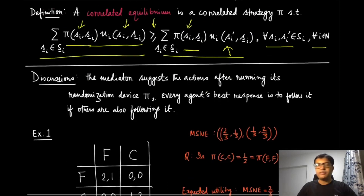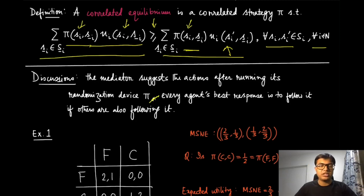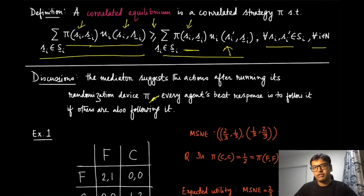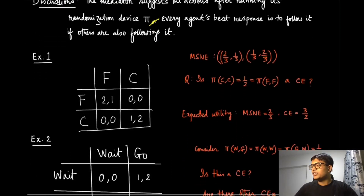The mediator suggests actions after running its randomization device pi — no subscript here, just pi, because there is no component-wise thing. Every agent's best response is to follow it if others are also following it. The whole intuition of correlated equilibrium can be summarized into that sentence.